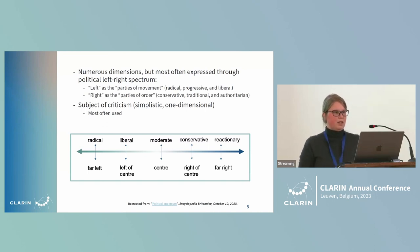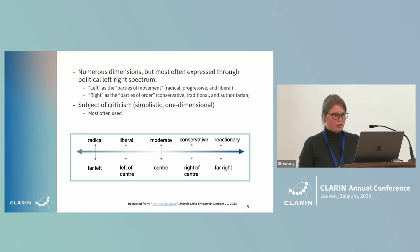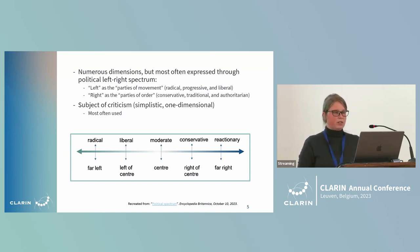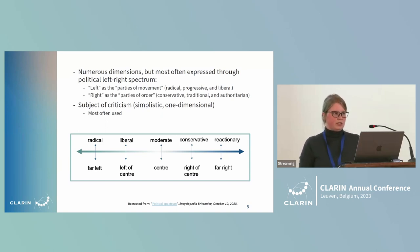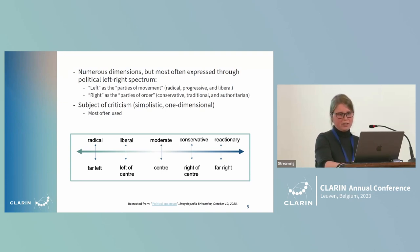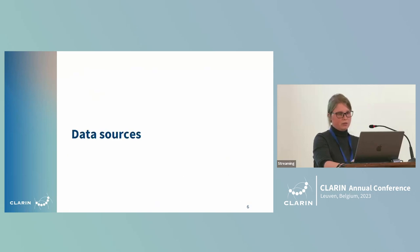On the left are parties of movement — radical, progressive, and liberal — and on the right are parties of order — conservative, traditional, and authoritarian. This representation has been subject to criticism as being too simplistic and one-dimensional, especially in the humanities and social sciences. However, it is still most often used and represents a starting position for how to approach adding metadata to existing corpora.